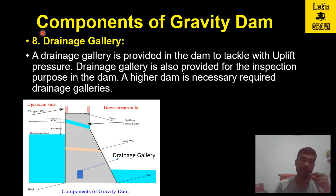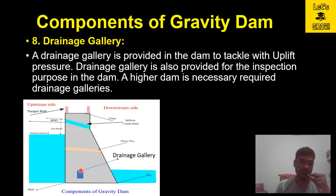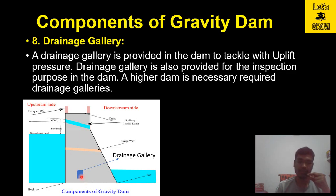The eighth component is the drainage gallery. A drainage gallery is provided in the dam to tackle uplift pressure and also for inspection purposes. Higher dams require drainage galleries. Multiple drainage galleries can be provided in a dam so that engineers can physically inspect the dam body for any cracks or seepage.